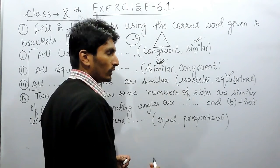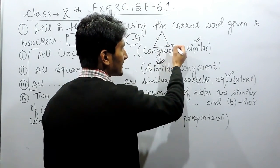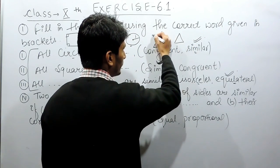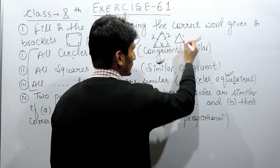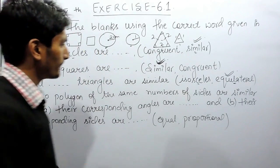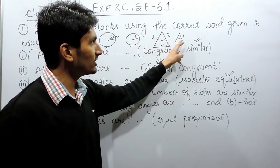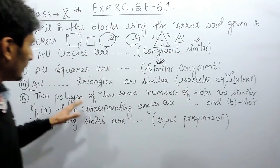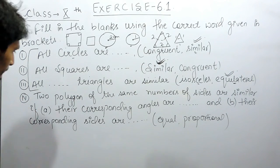In an equilateral triangle, all three sides are equal and each angle is 60 degrees. If I make two equilateral triangles — one with side 2 and one with side 1 — these two triangles must be similar because the shape is the same but the size is different. So all equilateral triangles are similar.